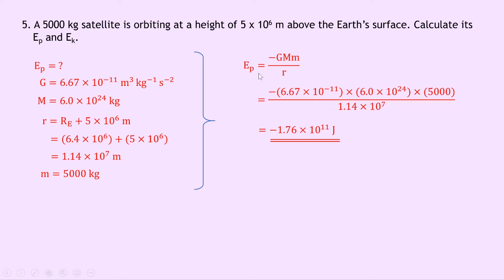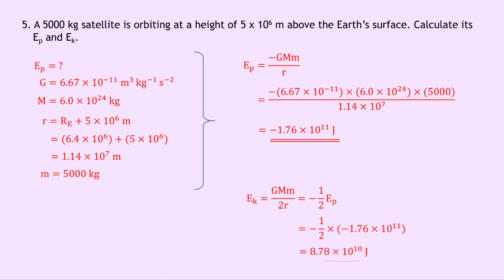Notice the negative sign because Ep is always negative. Our expression for kinetic energy was Ek equals GMm over 2r. We can use the result we've just calculated by writing Ek in terms of Ep: Ek equals minus a half times Ep, because all we need to do to get the Ep expression to look like the Ek expression is multiply by minus a half. So Ek equals minus a half times minus 1.76 times 10 to the 11, which gives 8.78 times 10 to the 10 joules — positive, as expected.